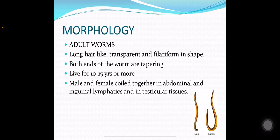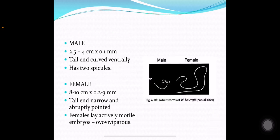Morphology of the adult worms: they are long, hair-like, transparent and filariform in shape. Both ends of the worms are tapering. They live for about 10 to 15 years or more. The male and female worms are coiled together in the abdominal and inguinal lymphatics and in testicular tissues.